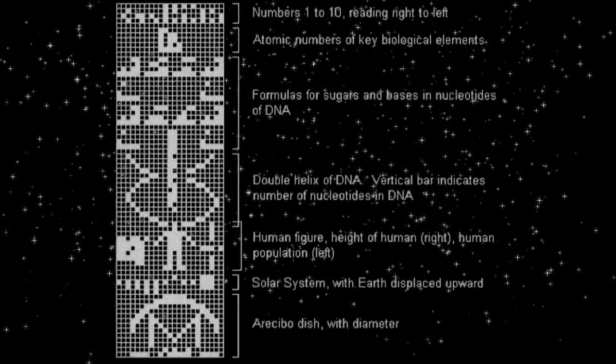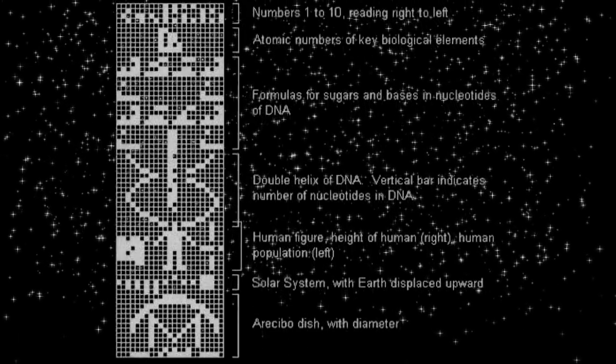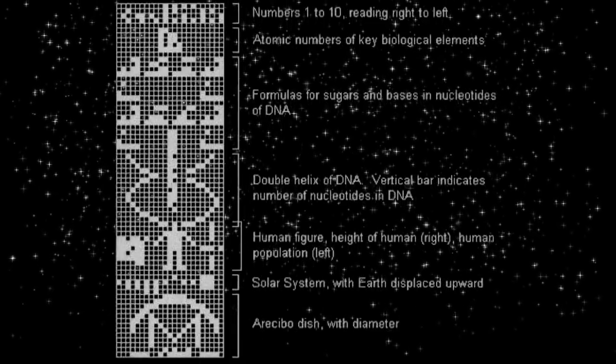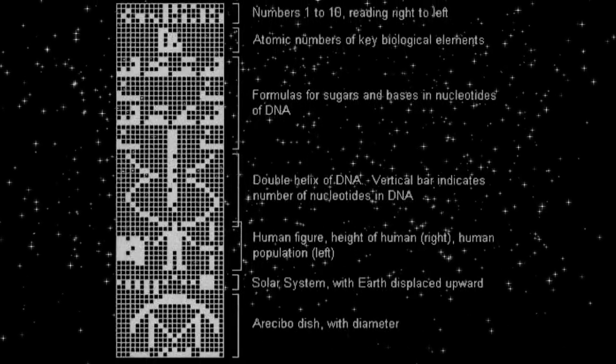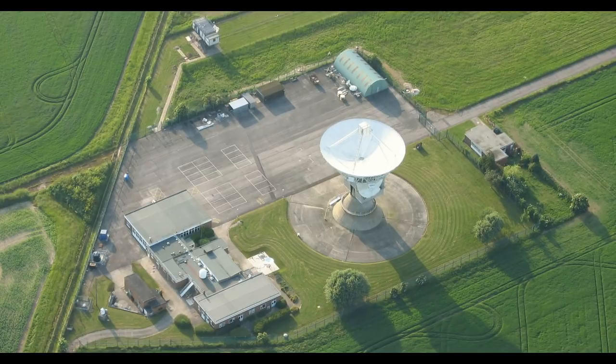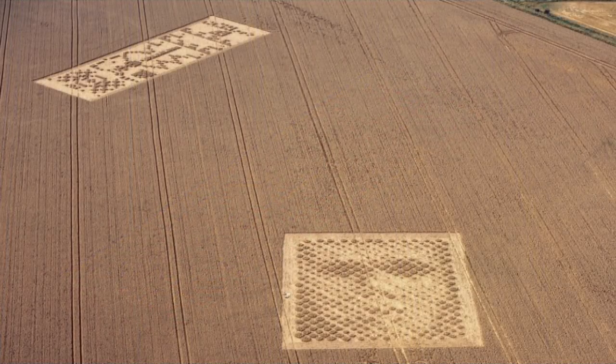A graphic figure of a human, the dimension and physical height of an average man, and the human population of Earth. A graphic of the solar system indicating which of the planets the message is coming from. A graphic of the Arecibo radio telescope and the dimension, the physical diameter, of the transmitting antenna dish. And in 2001, the Chilbolton crop circle seemed to deliver to us a direct answer.